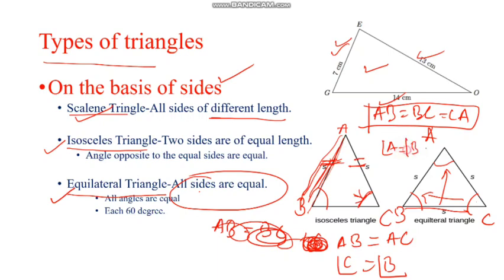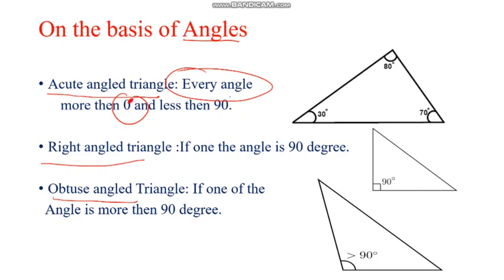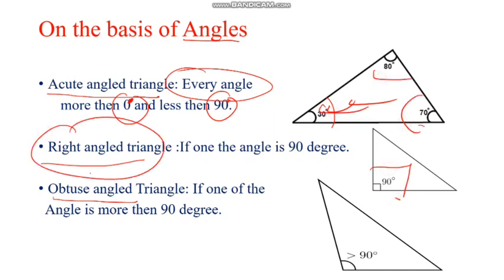Angle A is equal to angle B and angle C. On the basis of angle, we can see: acute angle triangle, right angle triangle, and obtuse angle triangle. Acute angle is more than 0 degrees and less than 90 degrees for every angle. Right angle is exactly 90 degrees. Obtuse angle is more than 90 degrees and less than 180 degrees. On the basis of side, we divided into 3 triangles, and on the basis of angle, we divided into 3 triangles also.